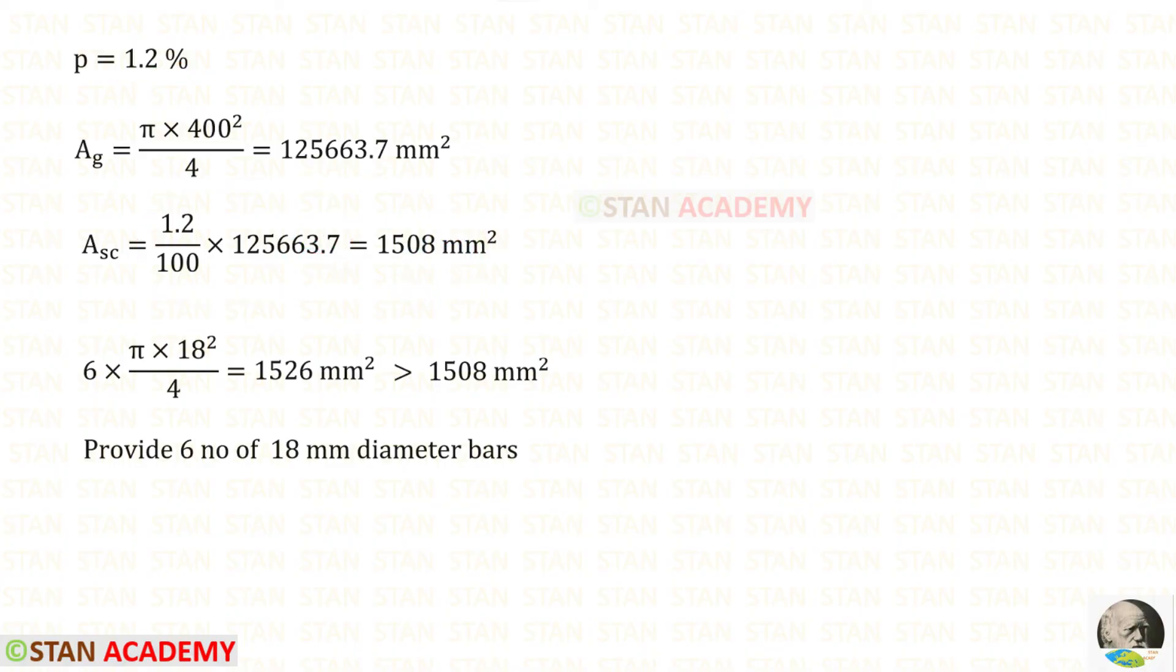Then to find the number of the bars and diameter of the bars we can use trial and error method. We have to get an area approximately equal to this area and a little more than this area. I have tried with the six numbers of 18 millimeter diameter bars. I have got an area approximately equal to this area and a little more than this area.